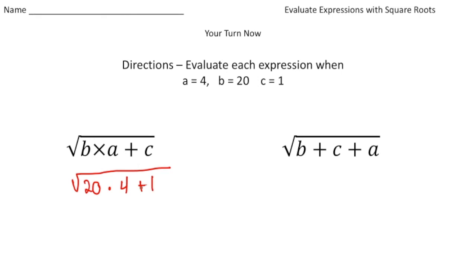And then we're going to add 1. So remember order of operations we always multiply before we add. So this is going to be 20 times 4 is 80. And then plus 1. And then 80 plus 1 will give us 81.